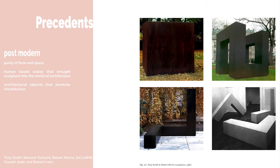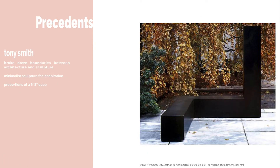Some of the key artists, sculptors, and architects were Tony Smith, Bernard Schumi, Robert Morris, Solowit, Donald Judd, and Robert Irwin. Tony Smith was a key example of one of the post-modern sculptors that really broke down the boundaries between architecture and sculpture. He created sculptures that were meant to be inhabited and put in public spaces. In this inhabitable sculpture, Tony Smith uses the proportions of a six-by-eight cube as a way of making a reference to common architectural standards such as the height of a door.